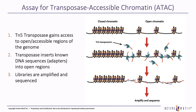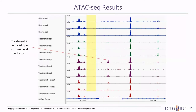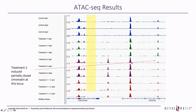We can read that next-gen sequencing data as peaks on a trace of the genome. Here we can see peaks from an ATAC-seq experiment. The peaks show loci that contain open chromatin. For example, treatment two induced some open chromatin at one particular locus, and also induced partial closing of chromatin at a different locus.